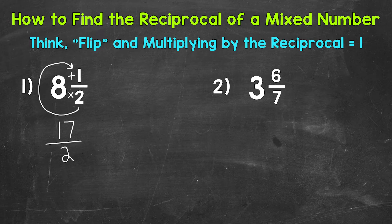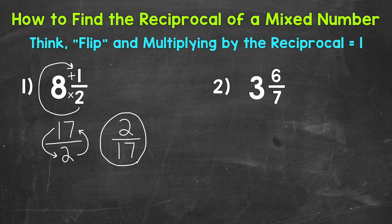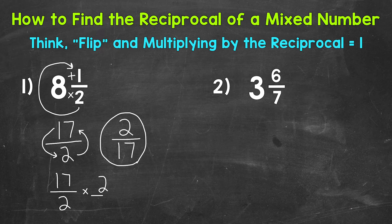Now that we have our improper fraction, we flip it to get the reciprocal. The denominator becomes the numerator, and the numerator becomes the denominator. So we get 2 over 17, and this is our reciprocal. Now let's multiply the improper fraction of 17 over 2 by the reciprocal, 2 over 17, to show that we get 1 when multiplying by the reciprocal. So 17 over 2 times 2 over 17 — when we multiply fractions, we multiply straight across. So 17 times 2 is 34.